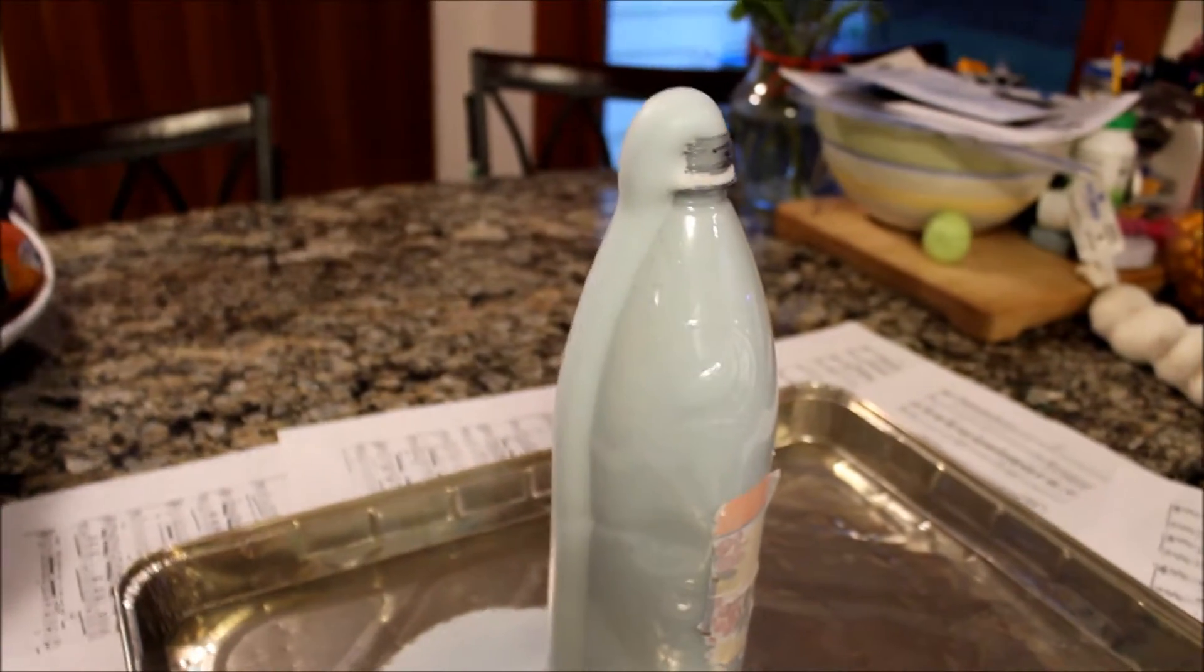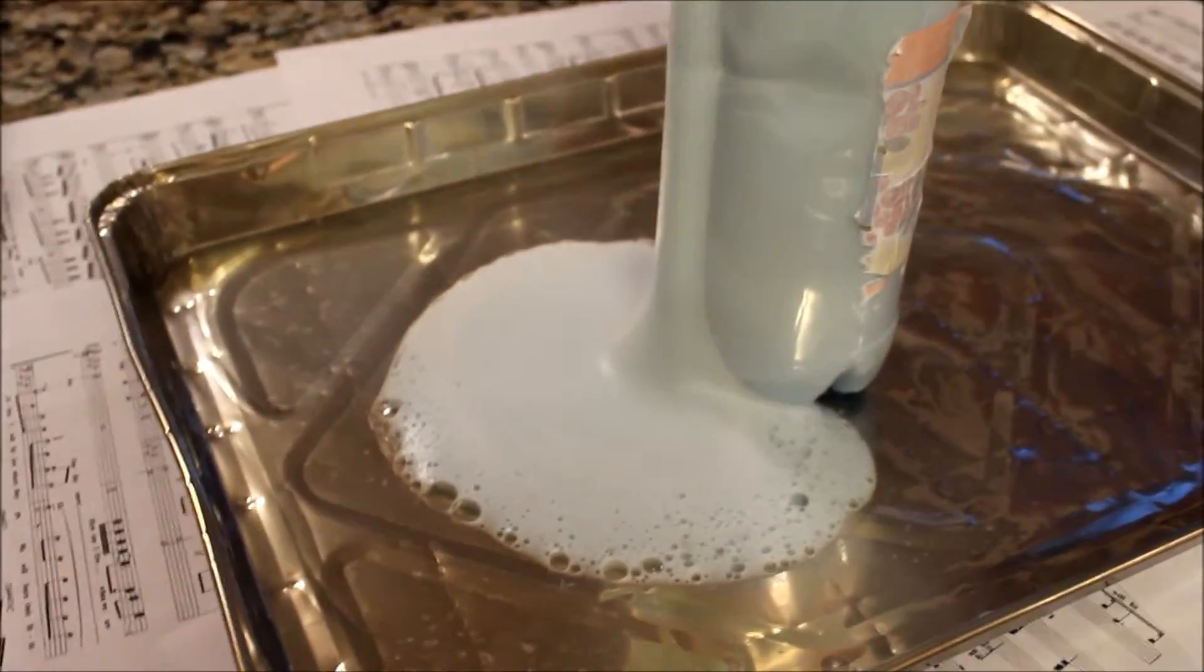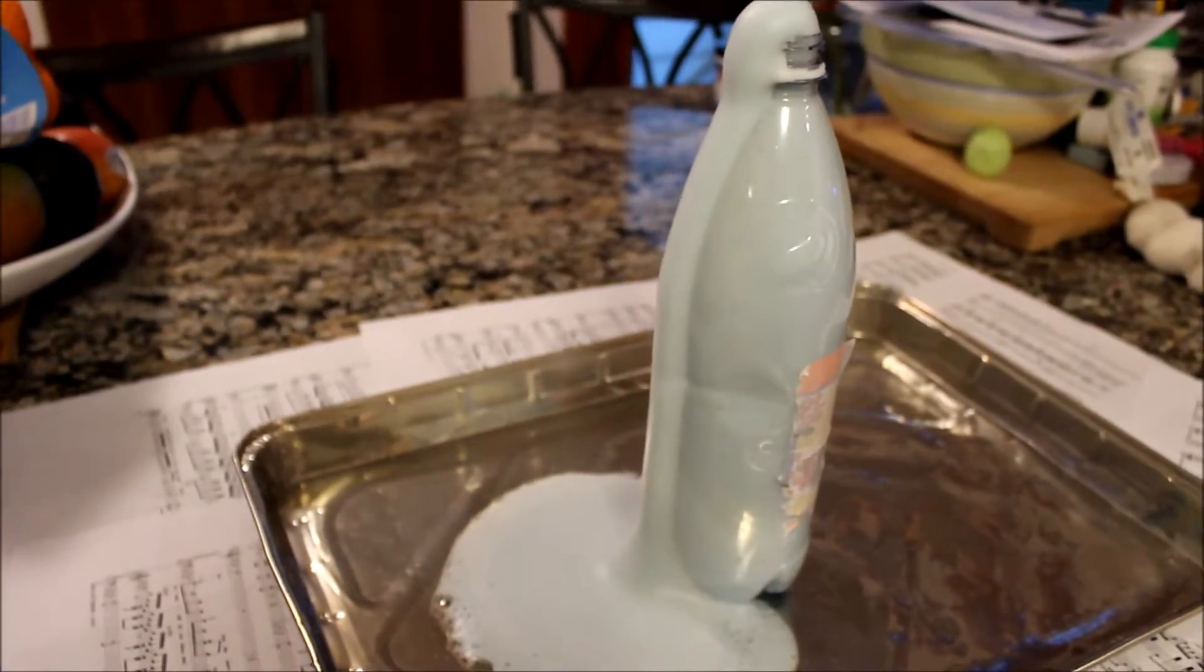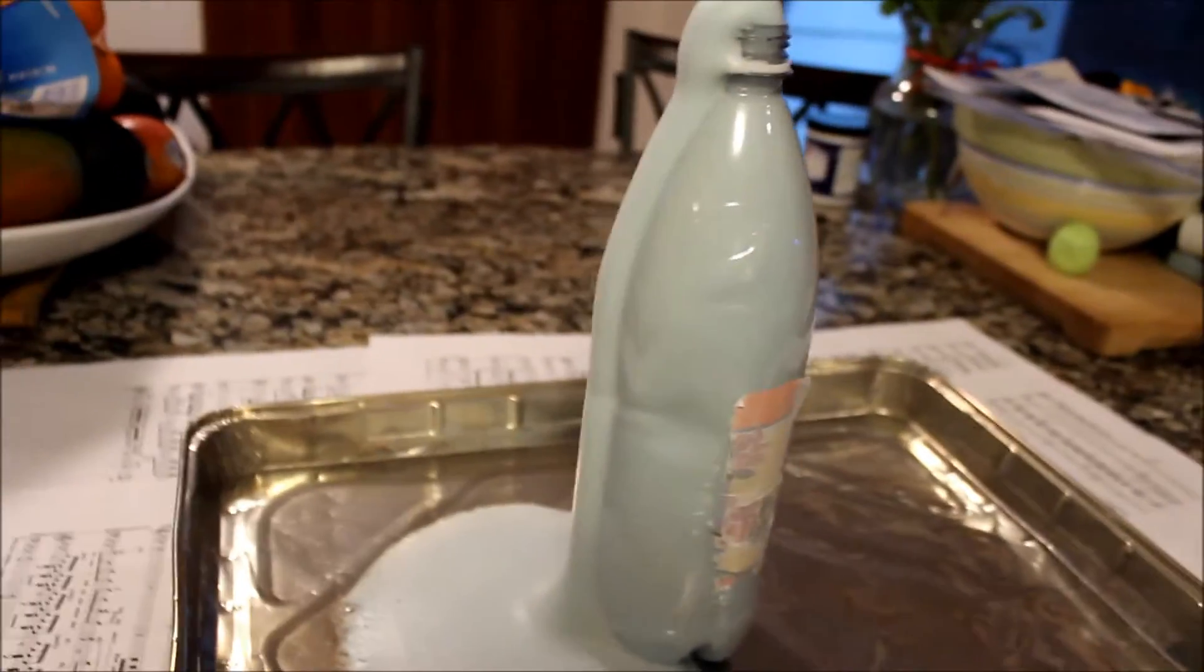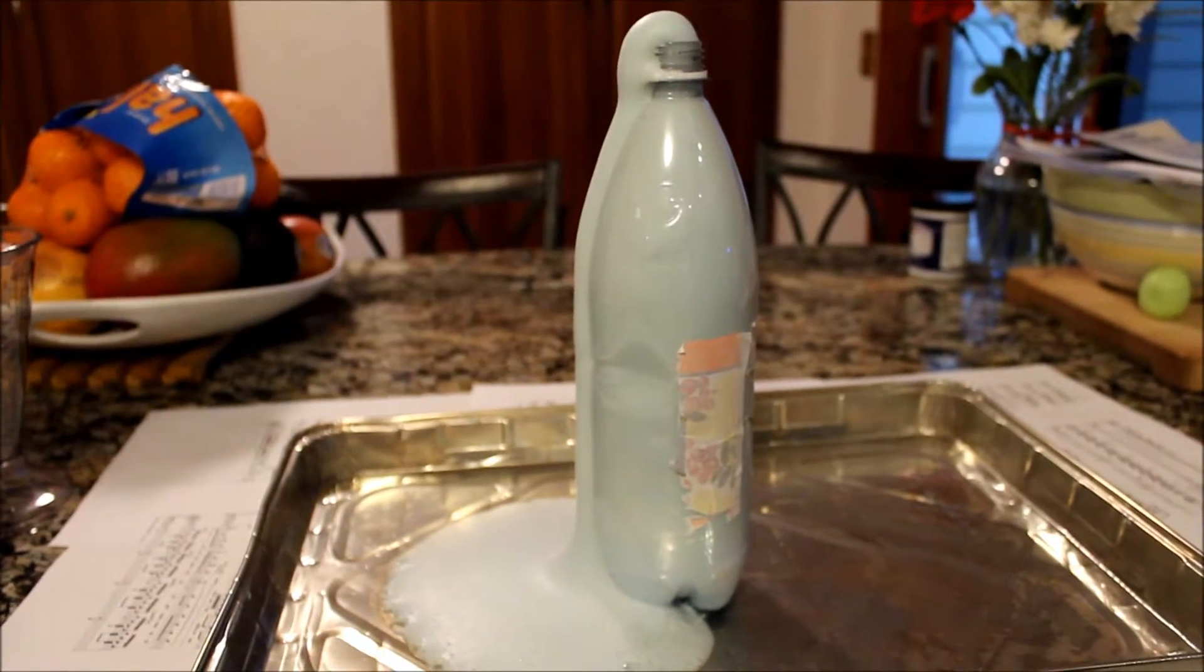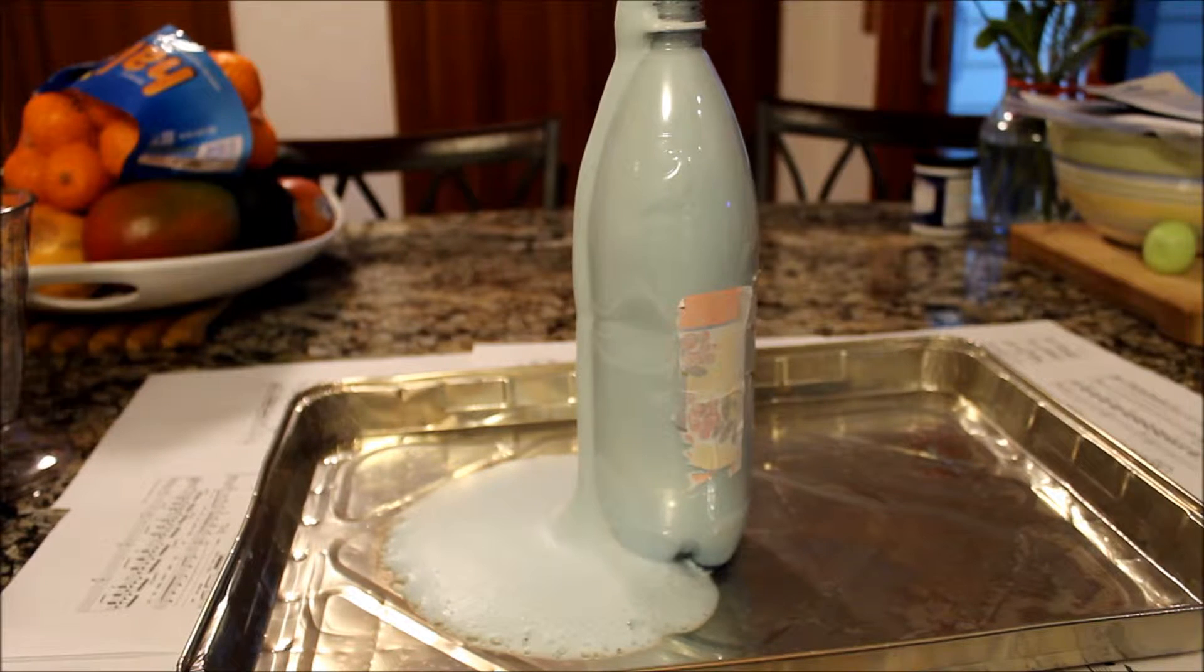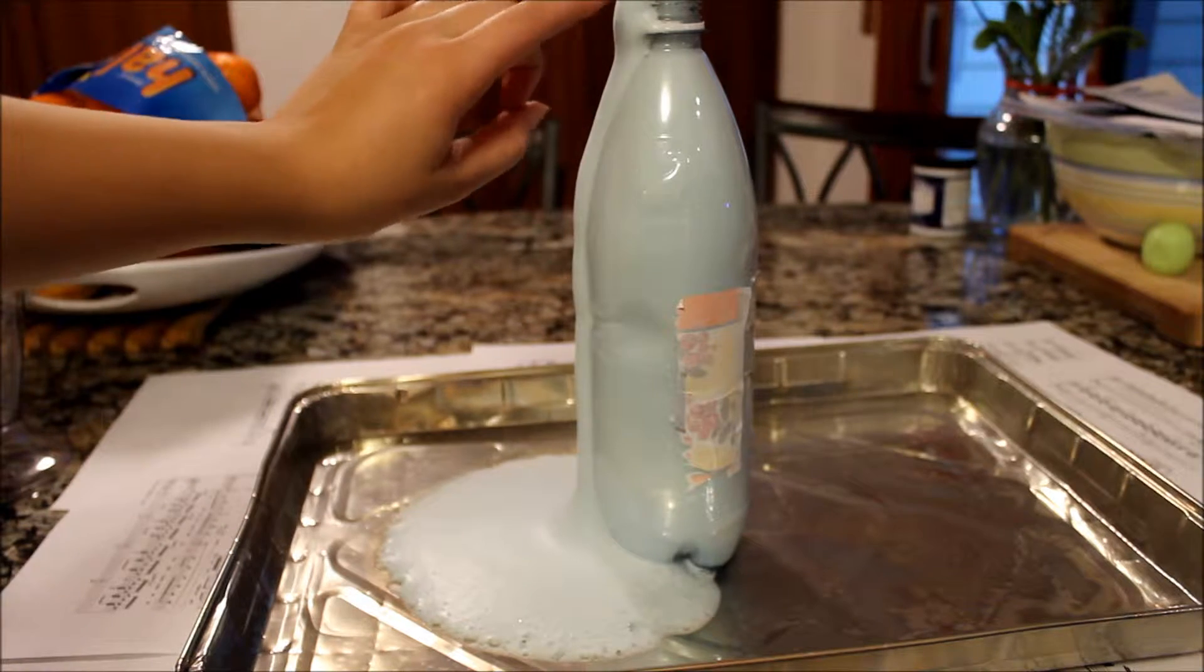And the way this works is that the hydrogen peroxide locks into the yeast and the yeast splits the oxygen and water. H2O2 is what hydrogen peroxide is made out of. It splits into oxygen and water without becoming chemically changed itself. Then the oxygen produced in the reaction combines with the dishwashing liquid, the soap, to produce this large amount of foam. And the rest of the water is left in the bottle with the dissolved yeast.